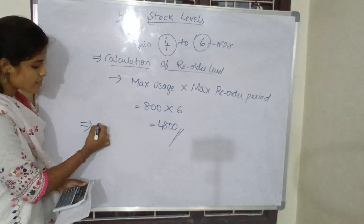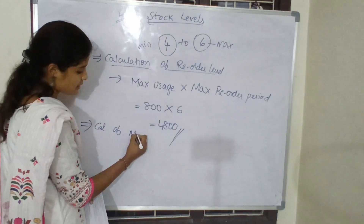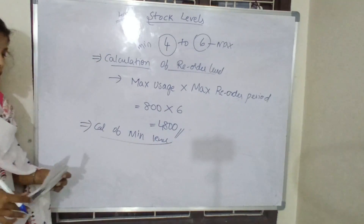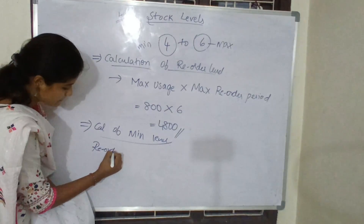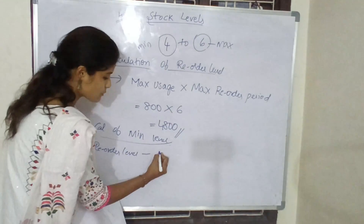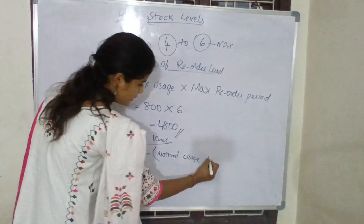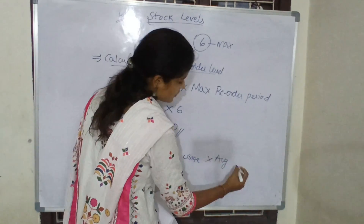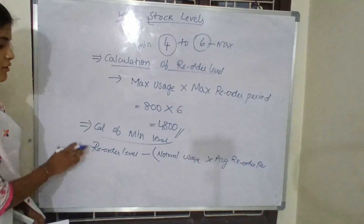Next, what they have asked? Calculation of minimum level. What is the formula of minimum level? It is reorder level minus normal usage — normal usage in the question, how much they have given: 600 — into average reorder period. This is the formula of minimum level.